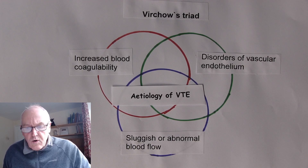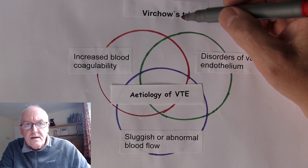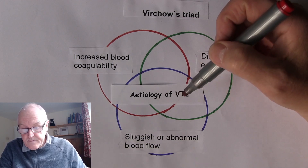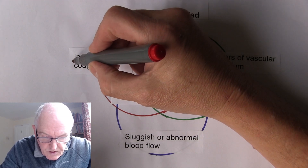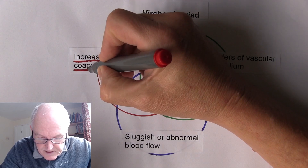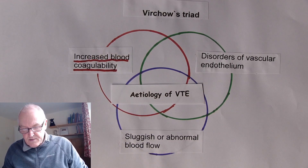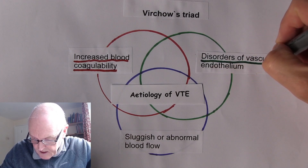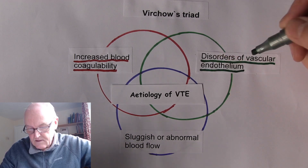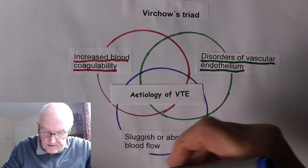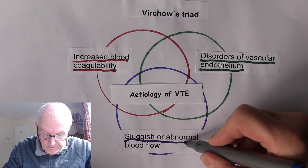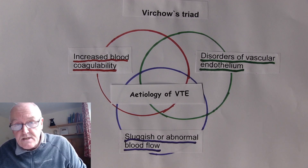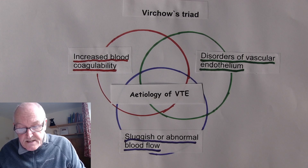What I want to do in this talk is consider the factors in Virchow's triad and consider how these can contribute to the etiology, to the causation of venothromboembolism. One cause leading to thrombosis is increased coagulability of the blood. It can also be caused by disorders of the vascular endothelium, the lining of the blood vessels, and by stagnant or abnormal blood flow. These are the three groups of factors, and we'll try to improve our understanding by thinking about how etiological factors fit into these three categories.